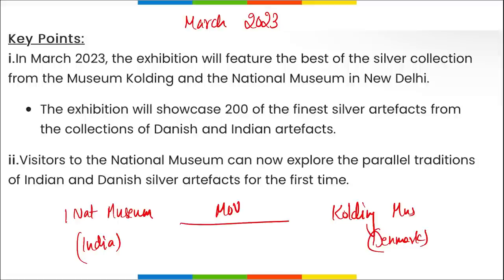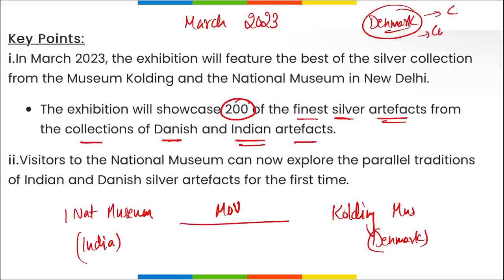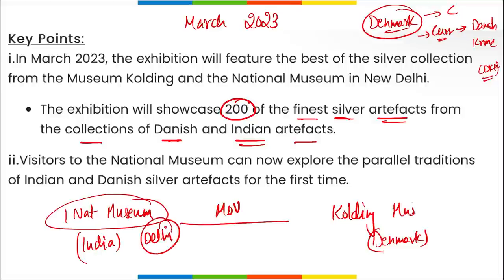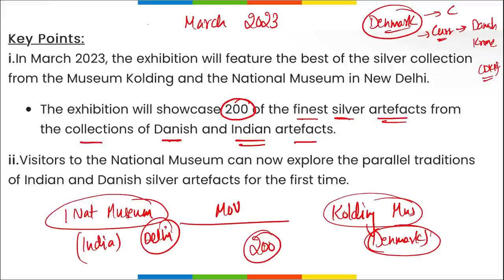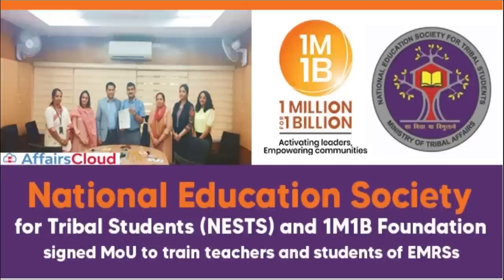This exhibition will take place in March 2023, and it will showcase silver collections from both museums - around 200 of the finest silver artifacts from Danish as well as Indian collections. Regarding Denmark: the capital is Copenhagen, the currency is the Danish Krone, also known as DKK. Remember that India's National Museum in Delhi signed an MOU with Museum Kolding in Denmark for this exhibition.